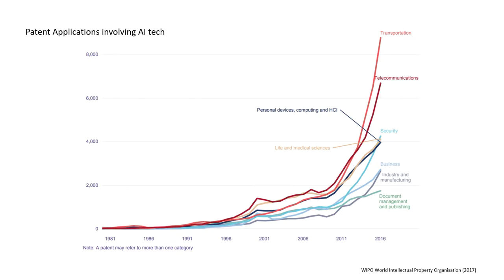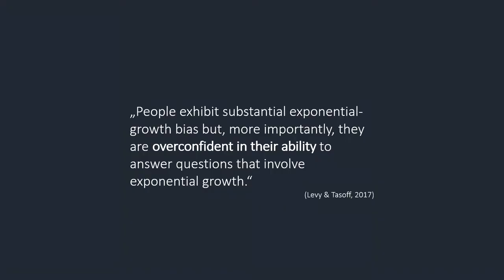These are all patents relating to AI in some way — this is life and medical sciences, and the bulk of these patents now come from China. Expect to see more surprising things happening in the overlapping area of AI and biotechnology. We have exponential growth and change in technology in many places, and we are pretty bad at understanding what this means. More importantly, a study notes: people exhibit substantial exponential growth bias — and more critically, they are overconfident in their ability to answer questions that involve exponential growth. Basically, we think we can do it, but we can't.